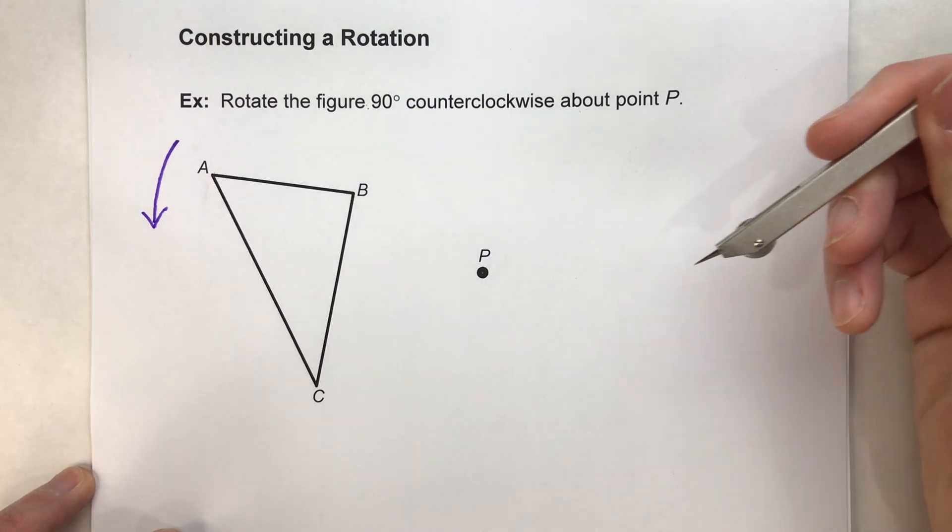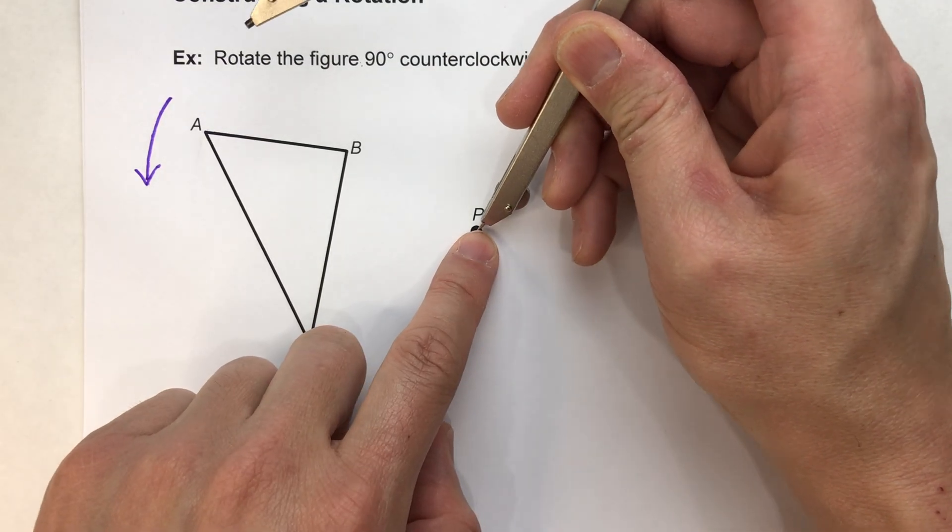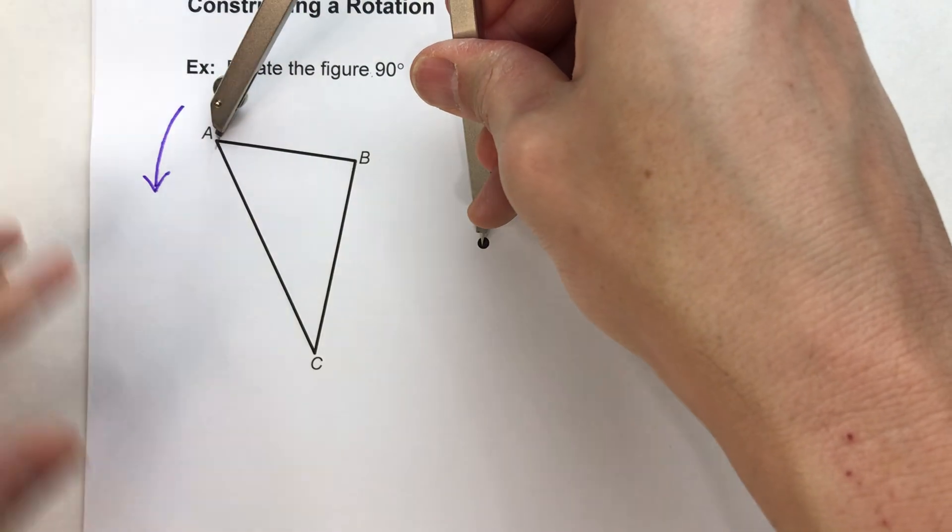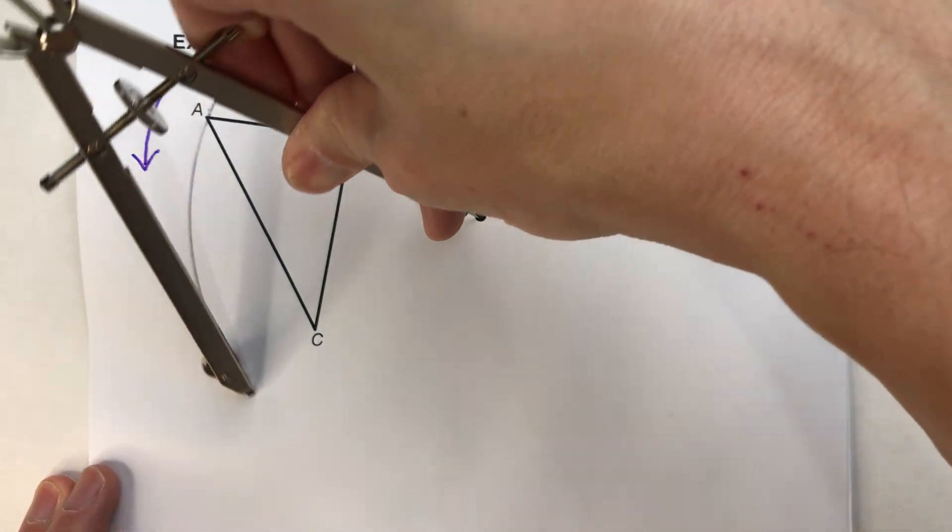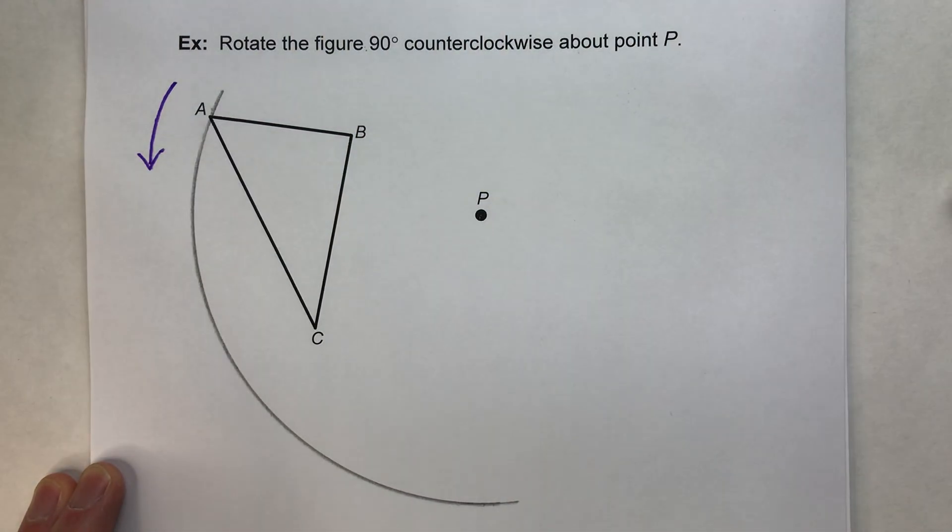So before I start, the first thing I'm really going to do is take the distance from P to each vertex of my triangle. So we'll start with A here. And what I'm going to do is just going to swing an arc from it to represent the path of point A.